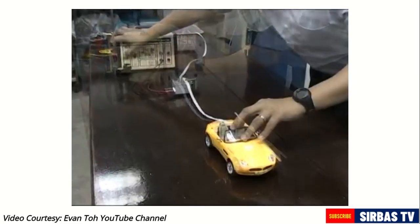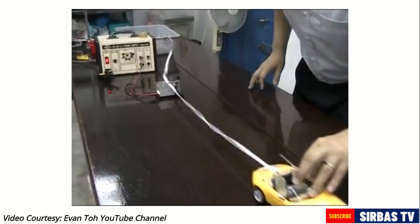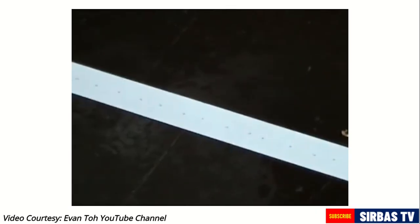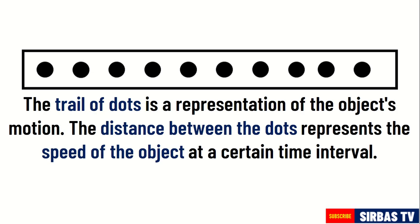As the object moves, the tape is dragged through a ticker, leaving a trail or mark of dots. The trail of dots is a representation of the object's motion. The distance between the dots represents the speed of the object at a certain time interval. Let us analyze the following dot diagrams.